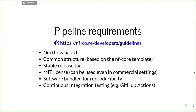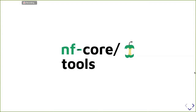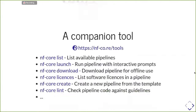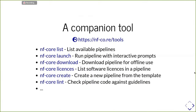Apart from pipelines, we also provide a companion tool called NF-core tools, that helps with the most common tasks. You can use it to list all the available pipelines within NF-Core, run a pipeline with interactive prompts asking about the different parameters that need to be selected, download the pipeline for offline usage, and transfer the pipeline code and containers to a server that is completely cut from the internet — which is our case in Sweden, where we have an offline server for human data. You can also list the licenses that all the tools in the pipeline are using.